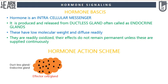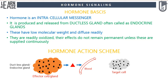Hormones are produced by ductless glands of the body, often termed endocrine glands. Once produced, hormones are transported into the blood across the body. Target cells recognize these hormones through specific receptors. Once target cells recognize these molecules, they get activated and deliver the necessary effect.